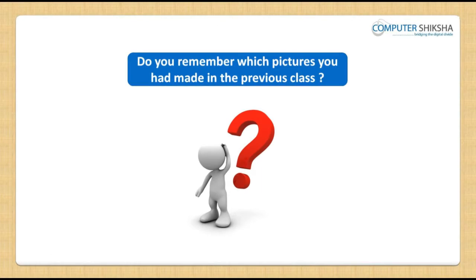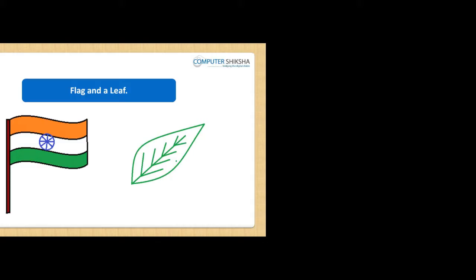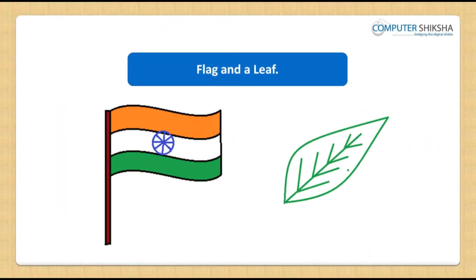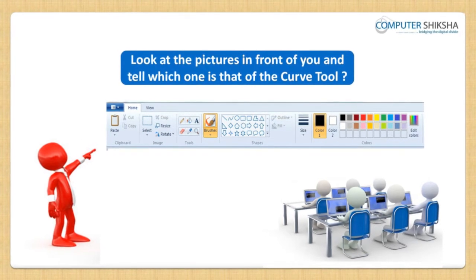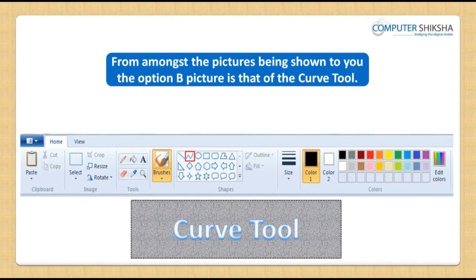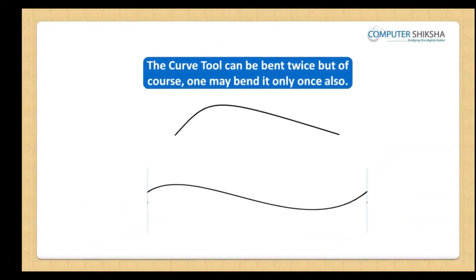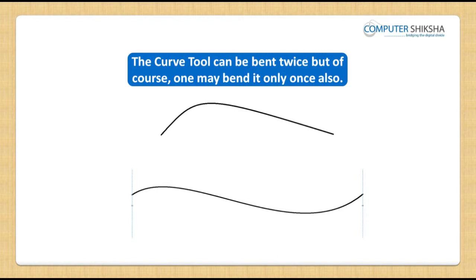Do you remember which pictures you had made in the previous class? In the previous class, you made pictures of mountain, flag and a leaf. From amongst the pictures being shown to you, option B is that of the Curve tool. The Curve tool can be bent twice, but if needed, you may bend it only once also.